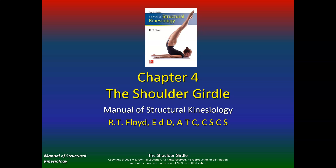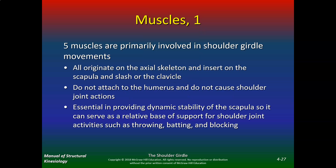Let's continue with chapter four and go into the muscles of the shoulder girdle. Five muscles are primarily involved in shoulder girdle movements. They all originate on the axial skeleton, insert on the scapula and/or the clavicle, do not attach to the humerus, and do not cause shoulder joint actions. They are essential in providing dynamic stability of the scapula so it can serve as a relative base of support for shoulder joint activities such as throwing, batting, and blocking.